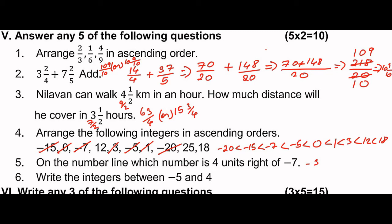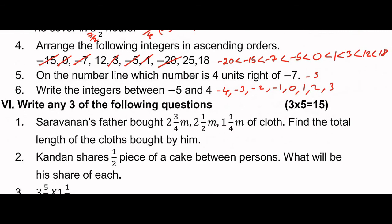Write the integers between minus 5 and 4. The integers between minus 5 and 4 (not including minus 5 and 4) are: minus 4, minus 3, minus 2, minus 1, 0, 1, 2, 3. These are the integers.